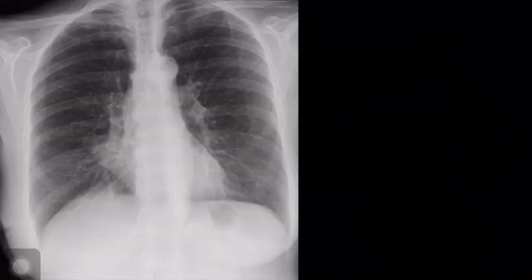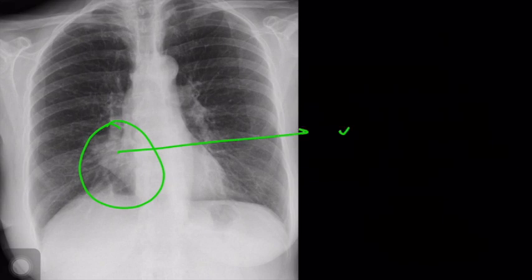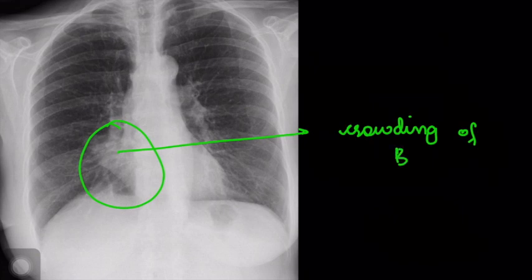Now take a look at the radiograph again. There is definitely evidence of volume loss. How do I come to that conclusion? Look carefully — you can see the crowding of bronchovascular markings. This gives us an upper hand towards the diagnosis of collapse of the right middle lobe.